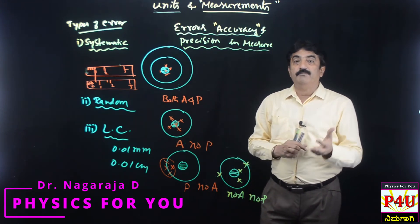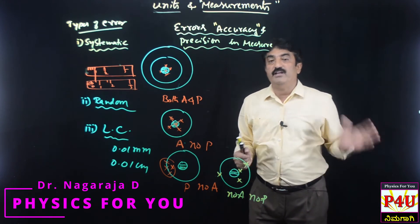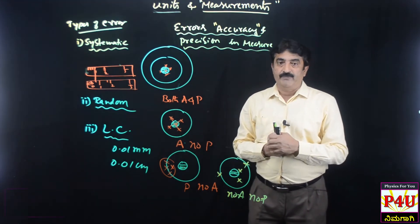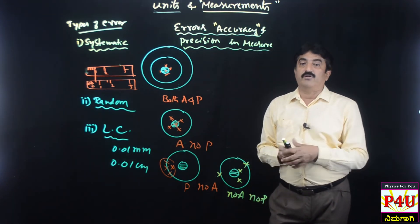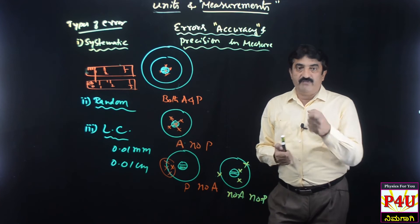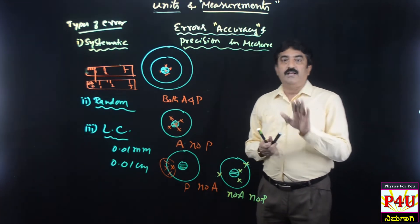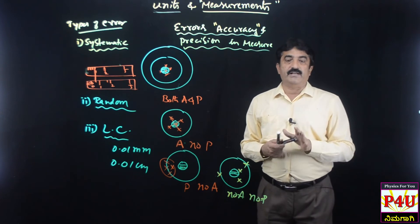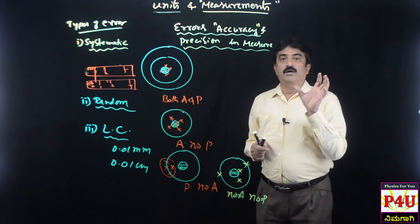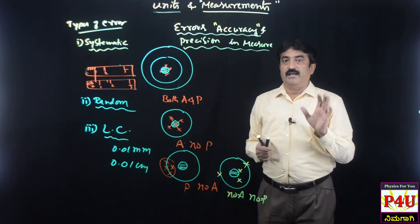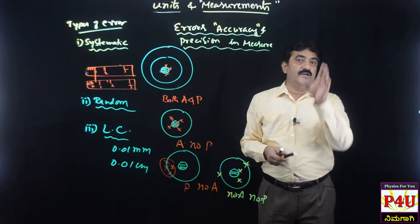If you want to avoid the error, you can minimize it and get the nearest accurate value. You can satisfy multiple values to reduce the error.